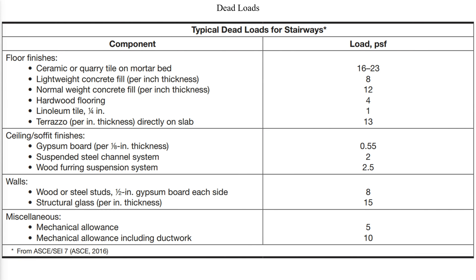Dead loads include self-weight of the steel framing and connections, treads and risers, guards, handrail, and landings. Additional considerations include floor finishes, soffit covers, mechanical allowances, and architectural or aesthetic elements. In some cases, stair members may also support stud walls or partitions. An allowance of 5 to 10 pounds per square foot should also be considered when mechanical, electrical, plumbing, or fire protection components will be supported from the underside of the stair.